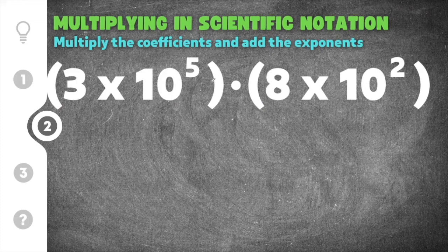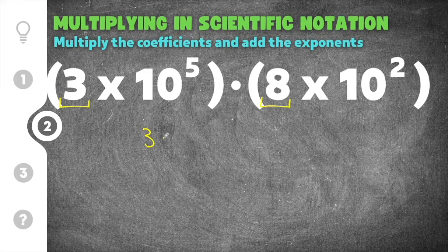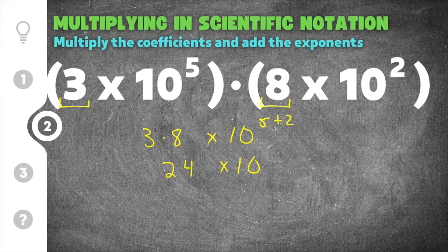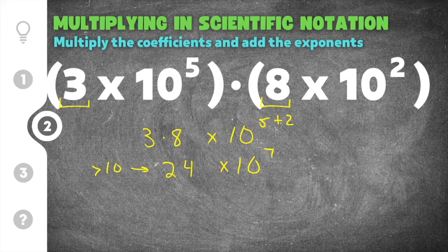The next problem is 3 times 10 to the 5th multiplied by 8 times 10 to the 2nd. We multiply the coefficients — 3 times 8 is 24 — and keep the base of 10, adding the exponents: 5 plus 2 equals 7. So we get 24 times 10 to the 7th power. But 24 is greater than 10, so we can't use 24 as our coefficient.